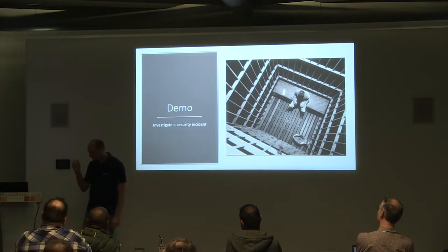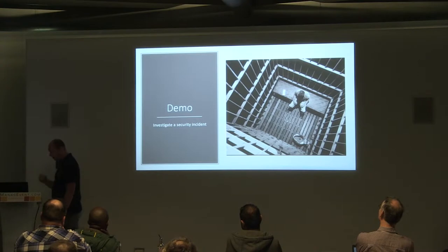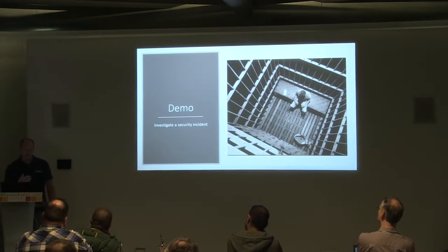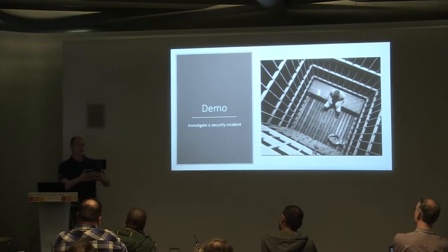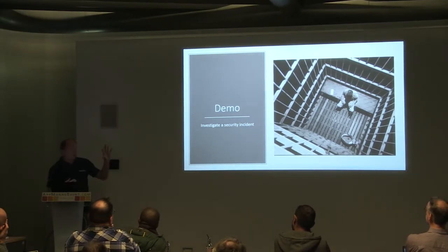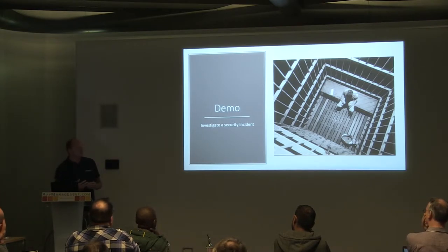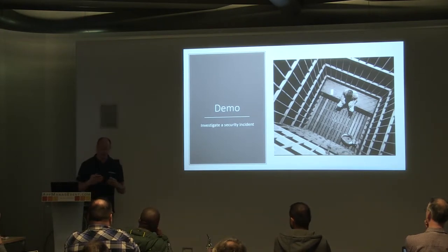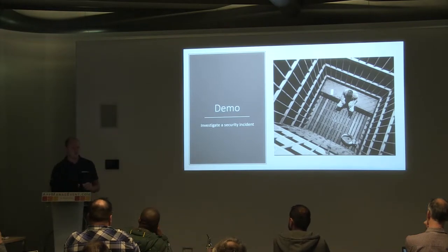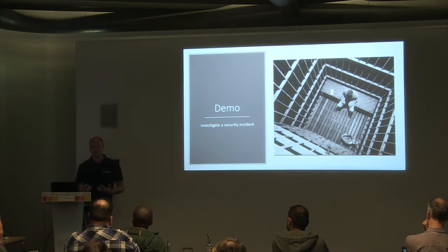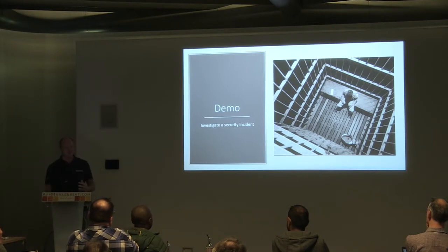There are two new things I want to show, because they represent the direction Microsoft is moving. You can now isolate machines from the network — a new feature released this summer — and you can release them again. You can also have a kind of back-channel to your system. Both features are usable but not yet fully version-one ready, but this is the way Microsoft is going.